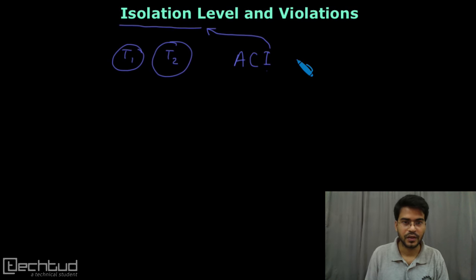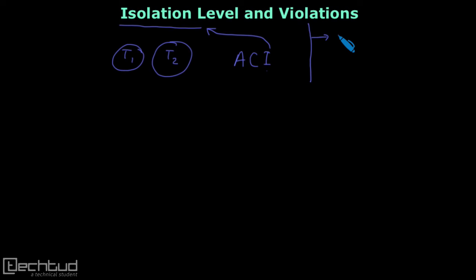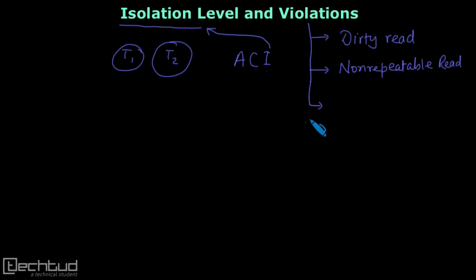So let's learn it. Before we list isolation levels and violations allowed, let's understand what violations are. The first one we will consider is dirty read. The second one is non-repeatable read. And the third one is phantom.